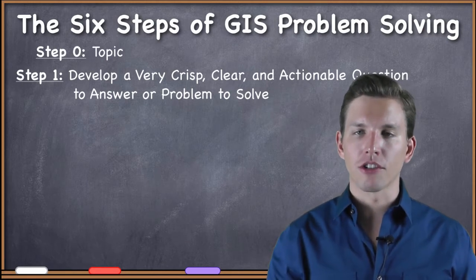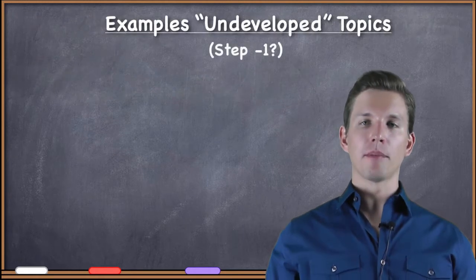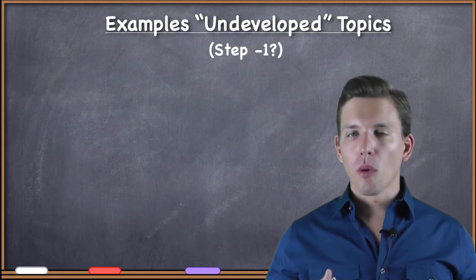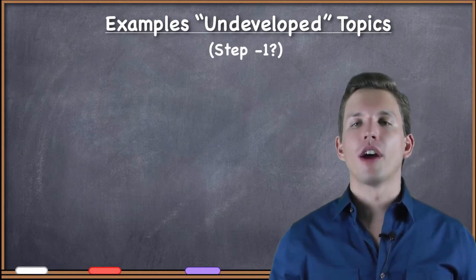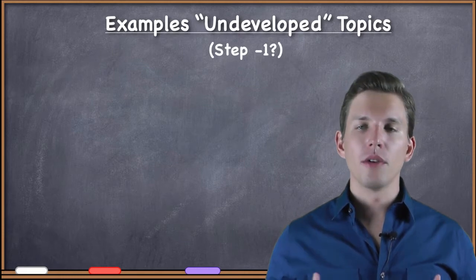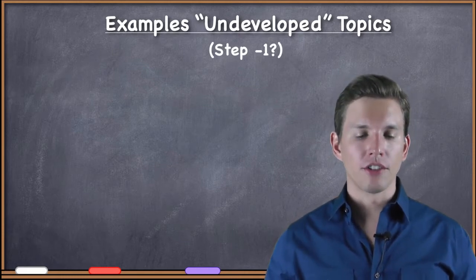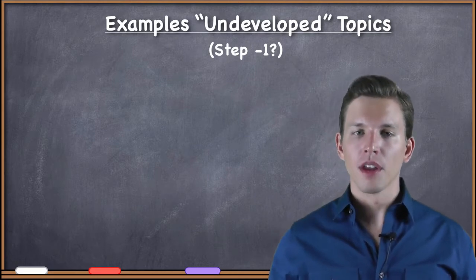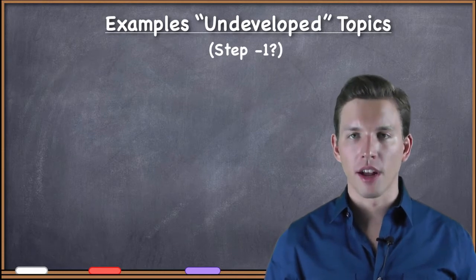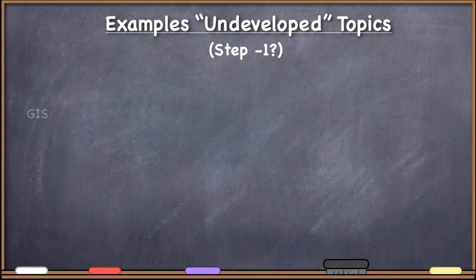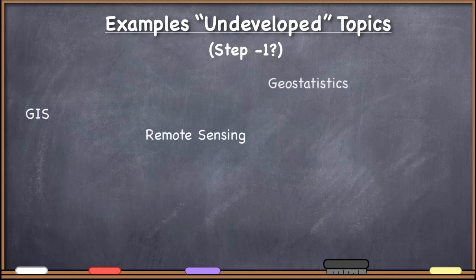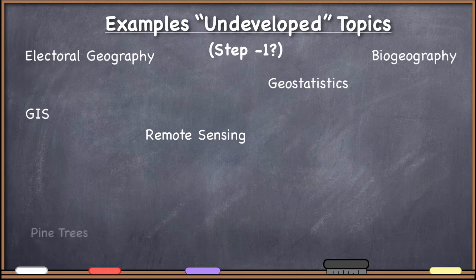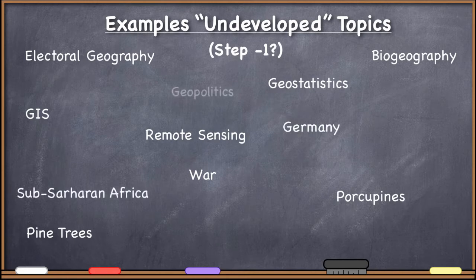Let me give you some examples of undeveloped topics. If there was a step negative one, we might say that if you have an undeveloped topic then you're still before step zero. You hear advice all the time that someone needs to develop their topic more. Here are some examples of undeveloped topics: GIS, remote sensing, geostatistics, electoral geography, biogeography, pine trees, war, porcupines, Germany, sub-Saharan Africa, geopolitics, quantitative methods, Croatia, snails.